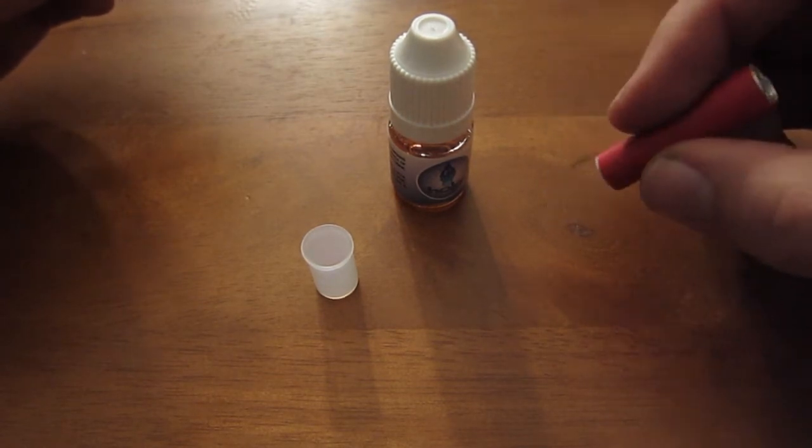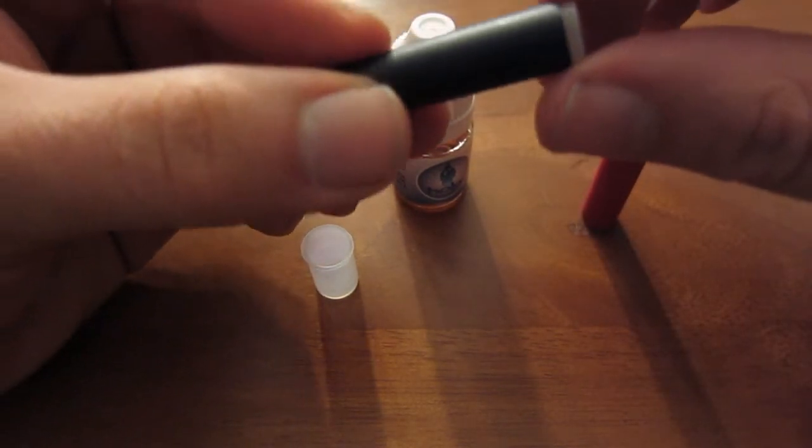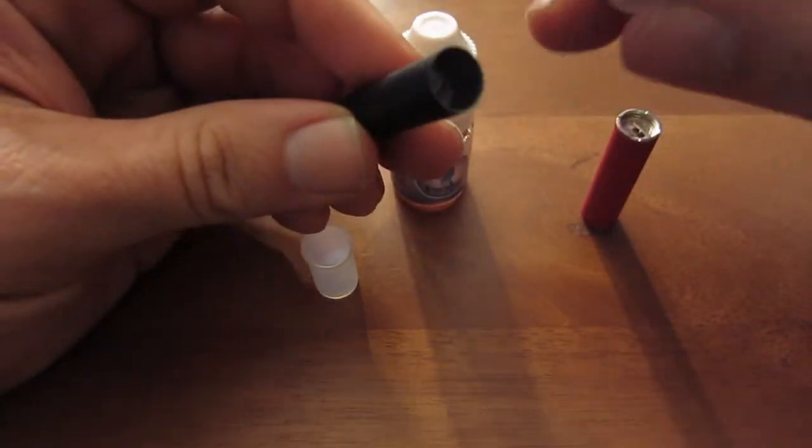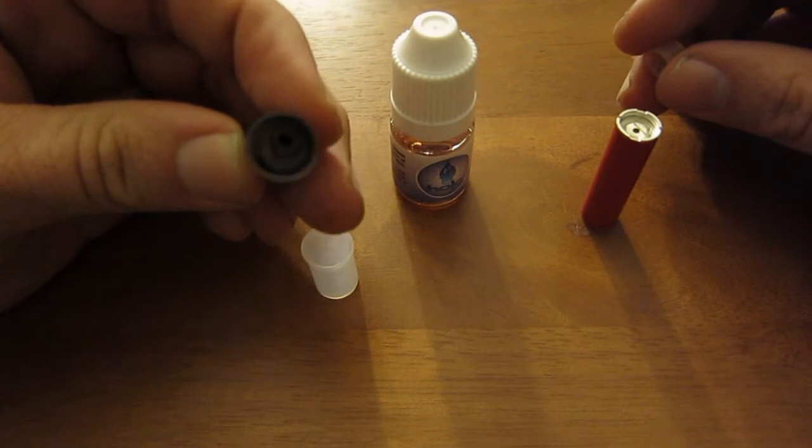So the ones that I was used to dealing with are these ones right here, where you have this rubber piece that comes off, and then you can just fill down there in the cotton.